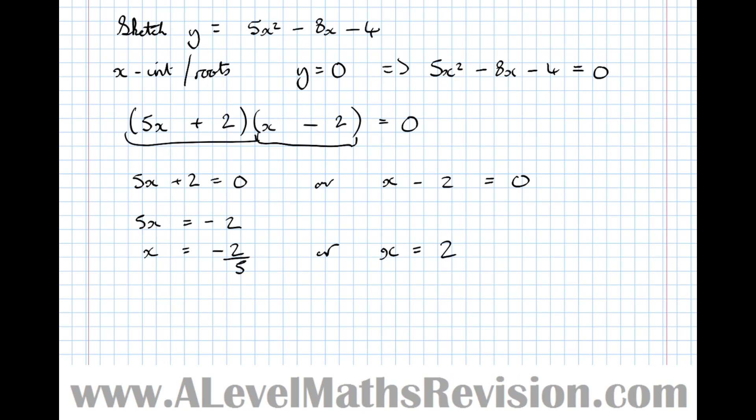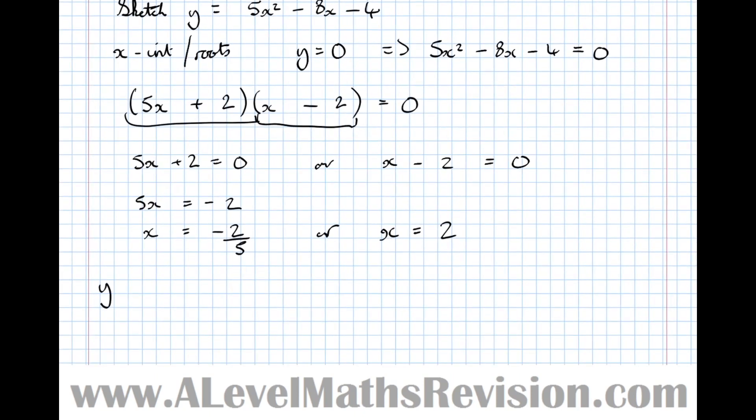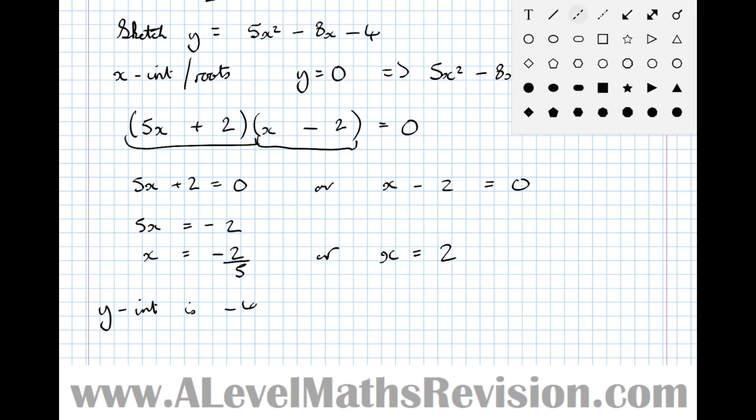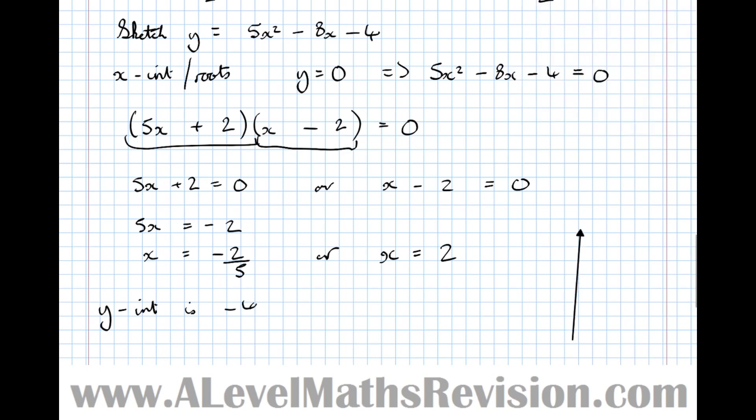So there's the x-intercepts. Now let's go for the y-intercepts. We can see it's just an ordinary quadratic so the y-intercept is -4. Technically speaking we get that by subbing x = 0 in there which will give us -4. And now we're ready to sketch the graph. Sketch is the key word - no table of numbers, just sketch it.